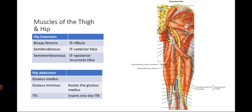The hip abductors are composed of the gluteus minimus and the tensor fascia lata. The primary hip abductor is the gluteus maximus, assisted by the gluteus minimus, while the tensor fascia lata inserts into the ITB.